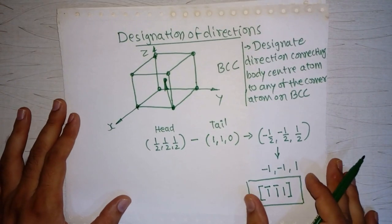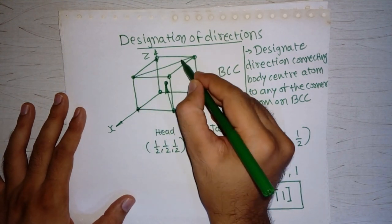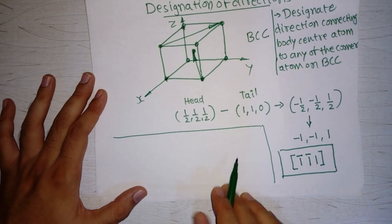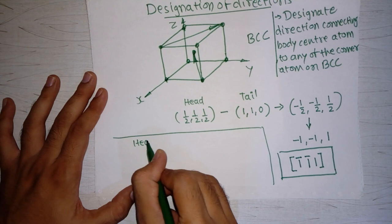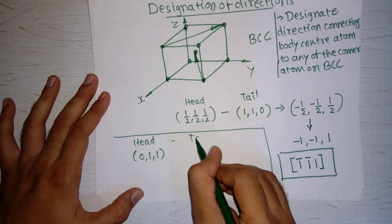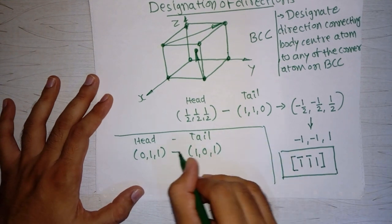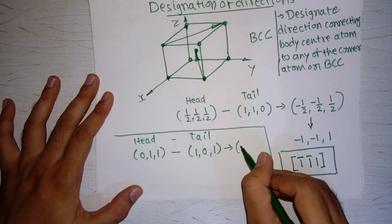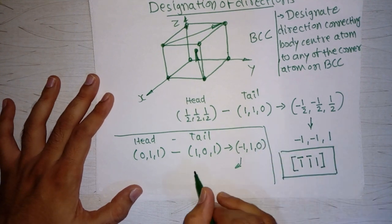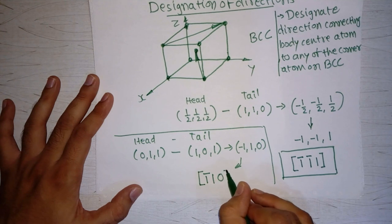Let's take one more example on the same unit cell. I want to define this direction. The coordinate values of the head are 0, 1, 1. Subtracting will give me minus 1, 1, zero. Writing in the designation of direction form, I get bar-one, one, zero. So this is the direction.